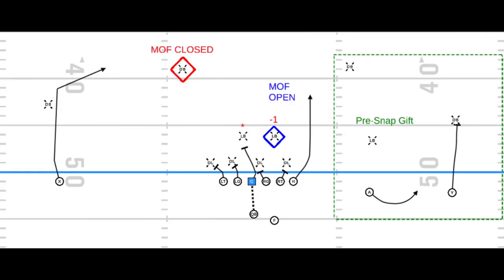The third variation builds off the second. It gives the offense an option to attack both middle-of-the-field open and middle-of-the-field closed coverage. We'll still have the pre-snap gift on, so if there's leverage and good numbers to the bubble, the quarterback gets the ball out quickly. If that pre-snap gift is taken away, he'll look for middle-of-the-field open or closed coverage based on where the safeties are aligned.